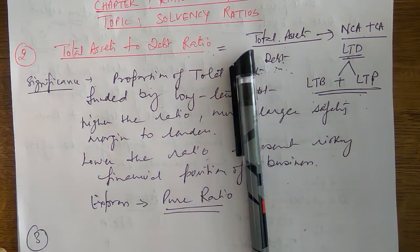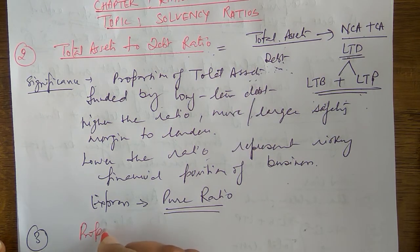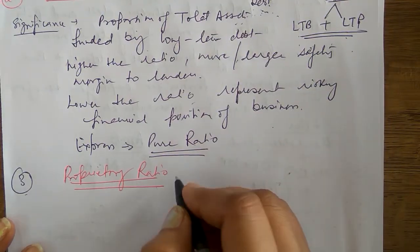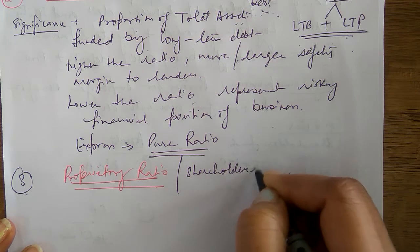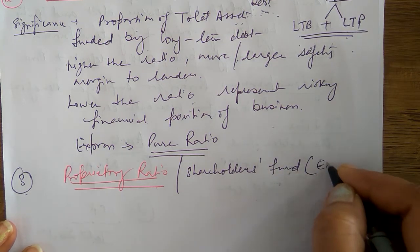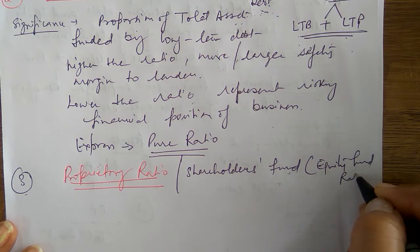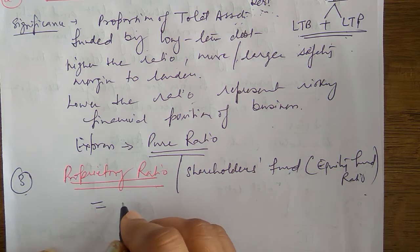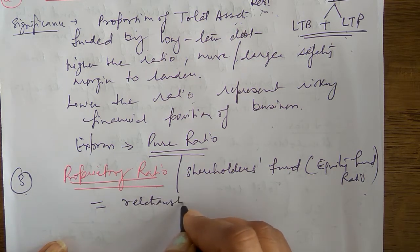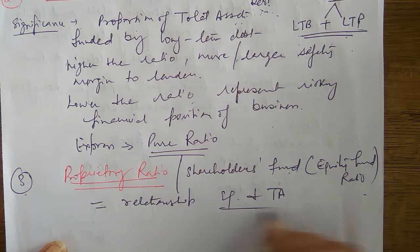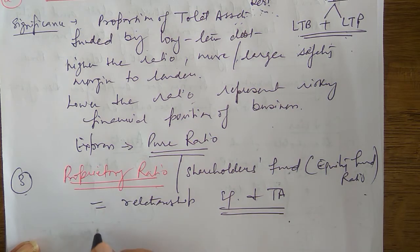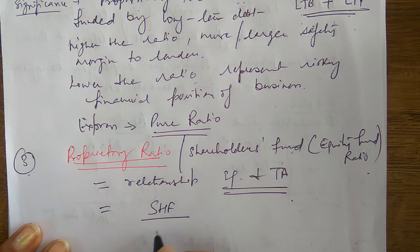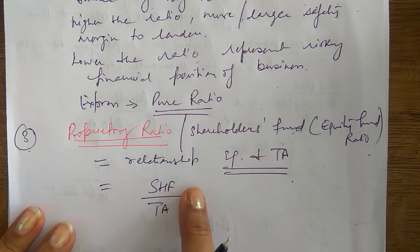Next we have the proprietary ratio. It also goes by other names: shareholders fund ratio and equity fund ratio. By whichever name it comes, the meaning remains the same. This ratio describes the relationship between equity and total assets. So the formula is: shareholders fund divided by total assets. SHF (shareholders fund) divided by total assets gives us the proprietary ratio.